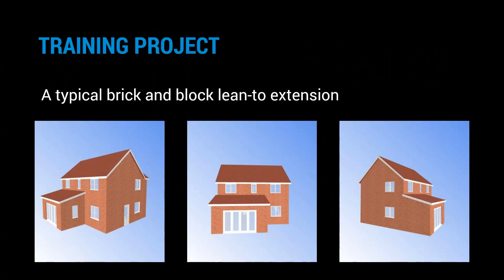In module one, we're going to estimate several elements of a job using a standard job template — some construction-based elements, some prelims and subcontract costs. The idea is to give you an overview of how the estimating engine works. We can't do a complete detailed estimate in our hour or hour and a half, but I'll talk you through a range of different elements. For today's training, we're imagining a really simple lean-to extension — a brick and block single storey lean-to with bifolds and a window.